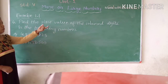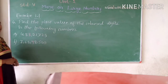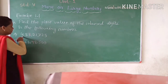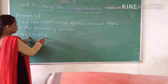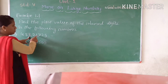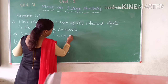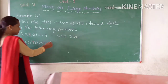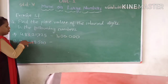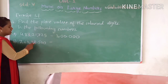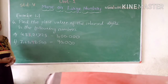Here is question number 4: find the place value of the colored digit in the following numbers. We have to identify in which place that digit is located. First example: 83,21,725 - the colored digit is 3. Counting from right: 1, 10, 100, 1000, 10,000, and lakhs - so it is in the lakhs place. The place value of this digit is 3 lakhs. Second example: 7,63,98,500 - the colored digit is 9, which is in the 10,000 place, so its place value is 90,000. Like this, solve all examples and complete exercise 1.1 in your classwork.